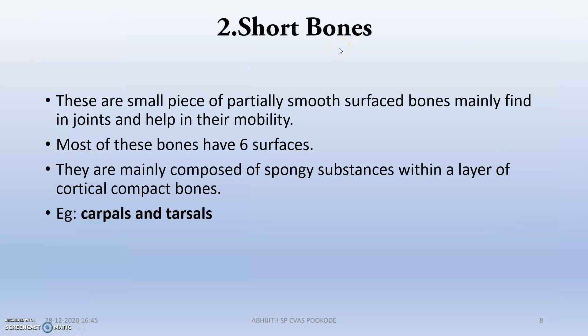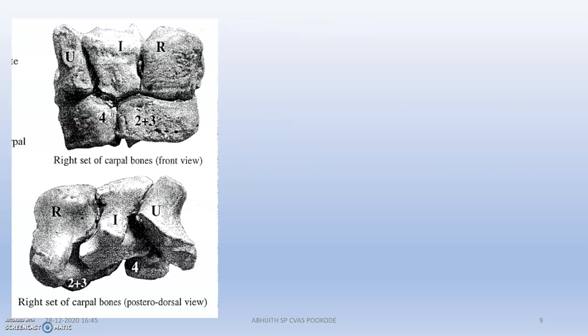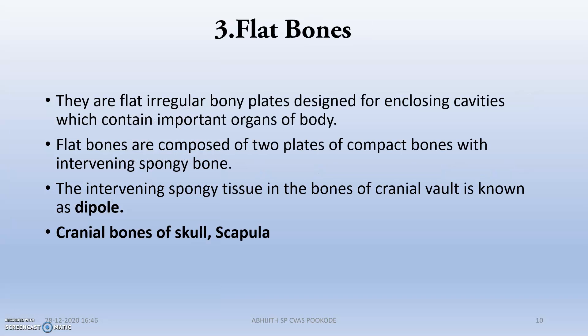Next are short bones. These are small pieces of partially smooth-surfaced bone, mainly found in joints, which help in mobility. They have six surfaces and are mainly composed of a spongy substance within a layer of compact cortical bone. Examples are the carpals and tarsals — you can see the carpal bones here.